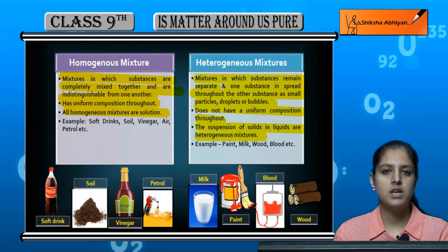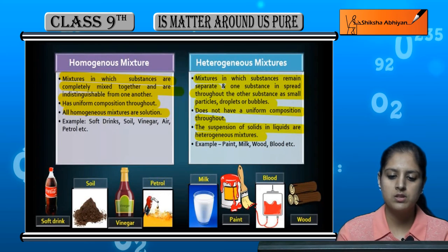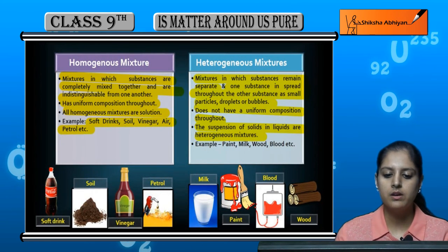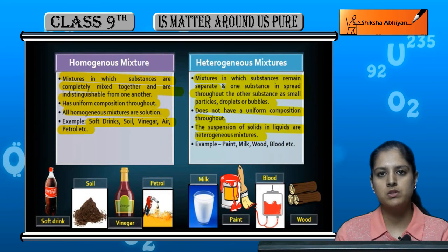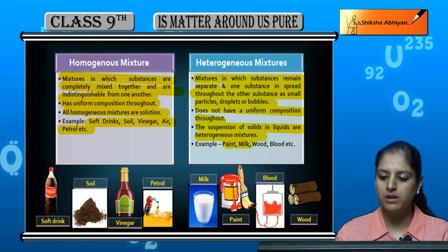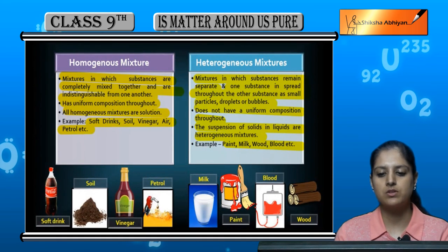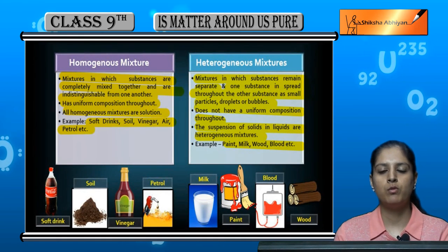Examples of homogeneous mixtures are soft drinks, vinegar, air, petrol, etc. Examples of heterogeneous mixtures include paint, milk, wood, and blood. This is all about mixtures — we will now move on to our next topic, compounds.